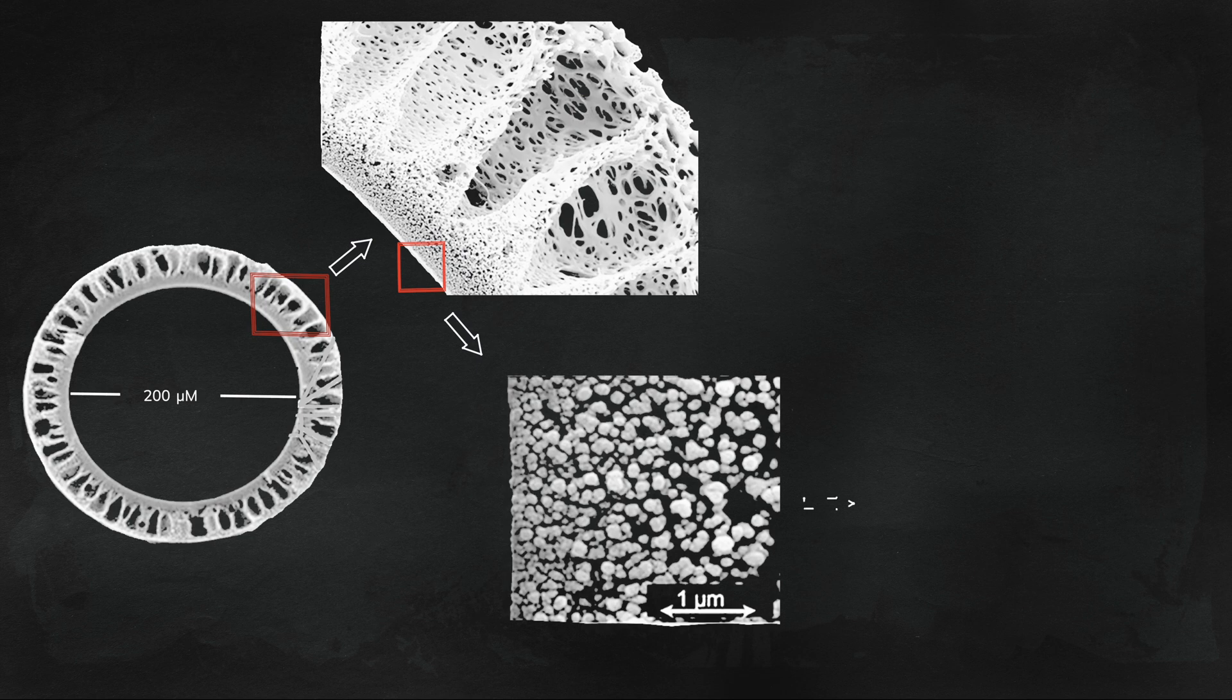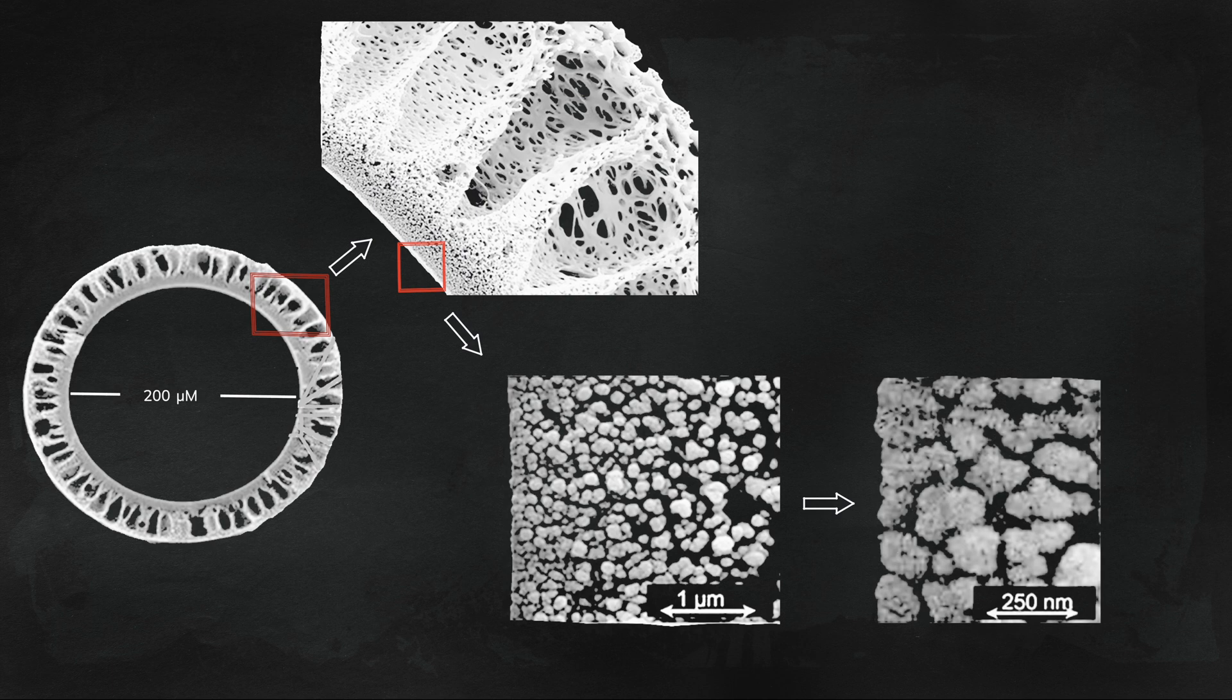An important byproduct of the use of membranes with larger pores is its implications on the quality of dialysis water used. There is significant internal filtration and back filtration that occurs with high flux membranes and more so with medium cutoff ones.